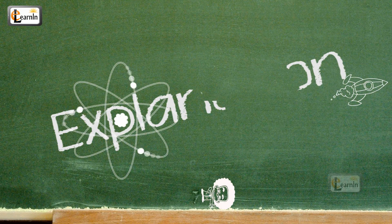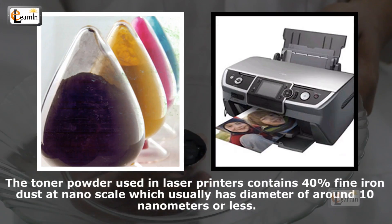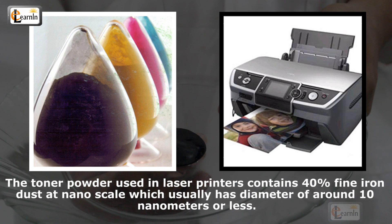Explanation: The toner powder used in laser printers contains 40% fine iron dust at a nanoscale, which usually has a diameter around 10 nanometers or less. In other words,